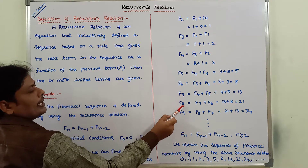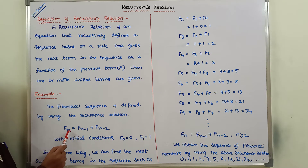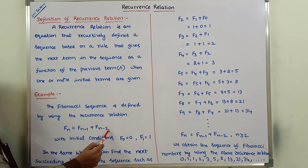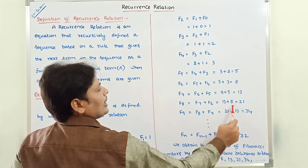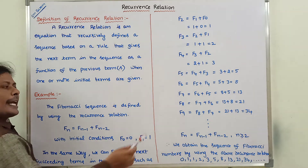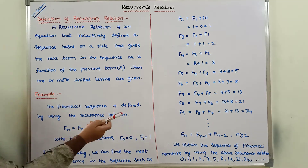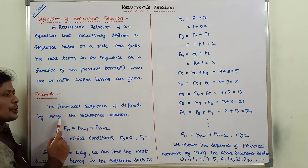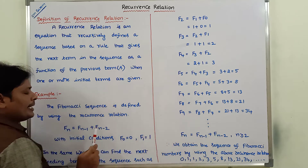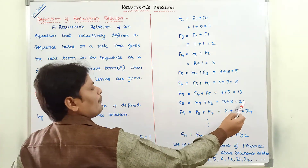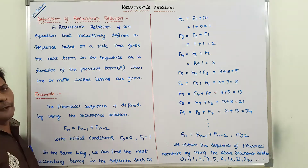The next term is f8, where n=8. Substituting: f8 = f7 + f6 = 13 + 8 = 21. The next term is f9, where n=9: f9 = f8 + f7 = 21 + 13 = 34. In the same way, we find out the next terms in the sequence as a function of the previous terms recursively.